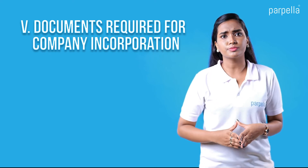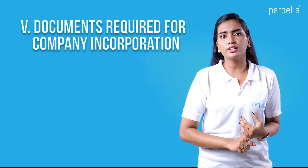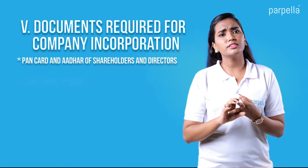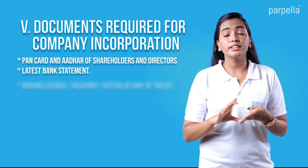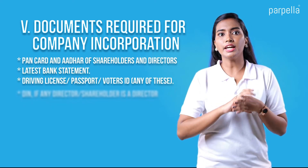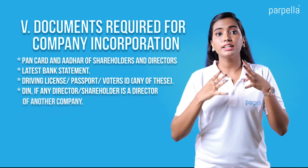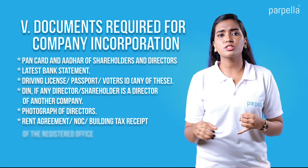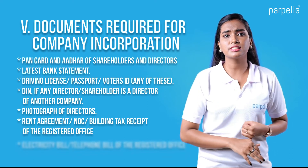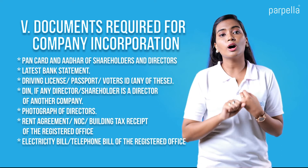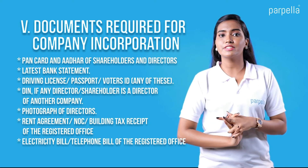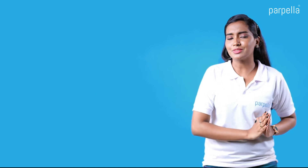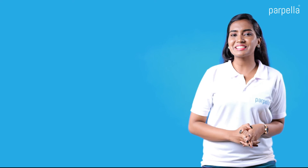Now let us quickly go through the documents required for company incorporation. You will need: PAN card and Aadhaar of shareholders and directors, latest bank statement, driving license or passport or voter's ID, director identification number if any director or shareholder is already a director of another company, photograph of the directors, rent agreement or NOC or building tax receipt of the registered office, and electricity bill or telephone bill of the registered office. I hope you got an understanding about the procedures of company incorporation. See you in the next video!